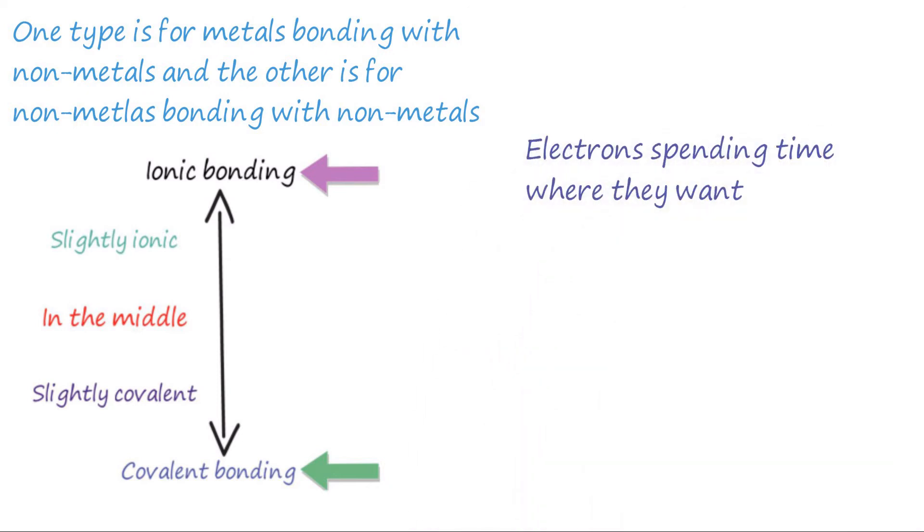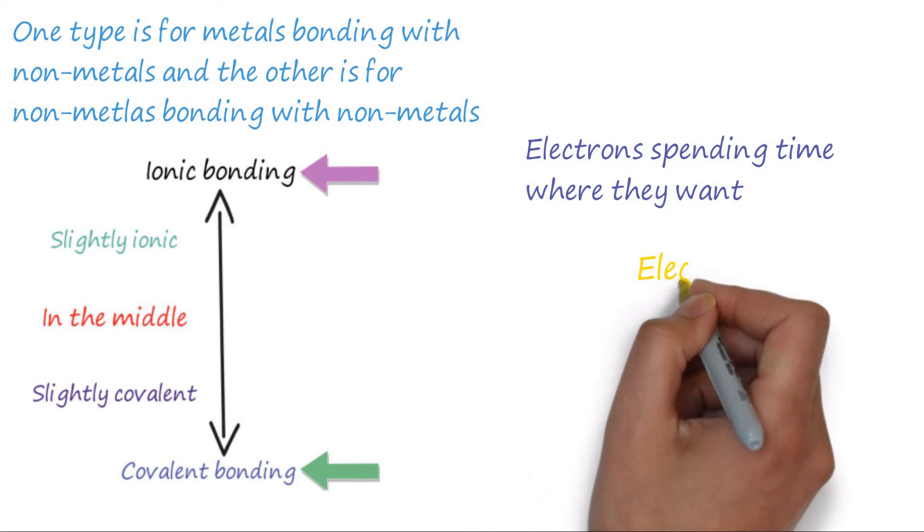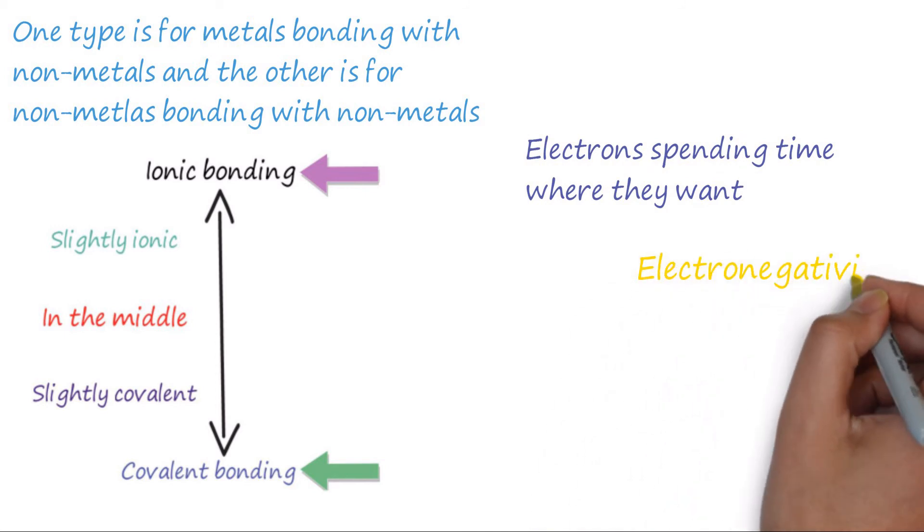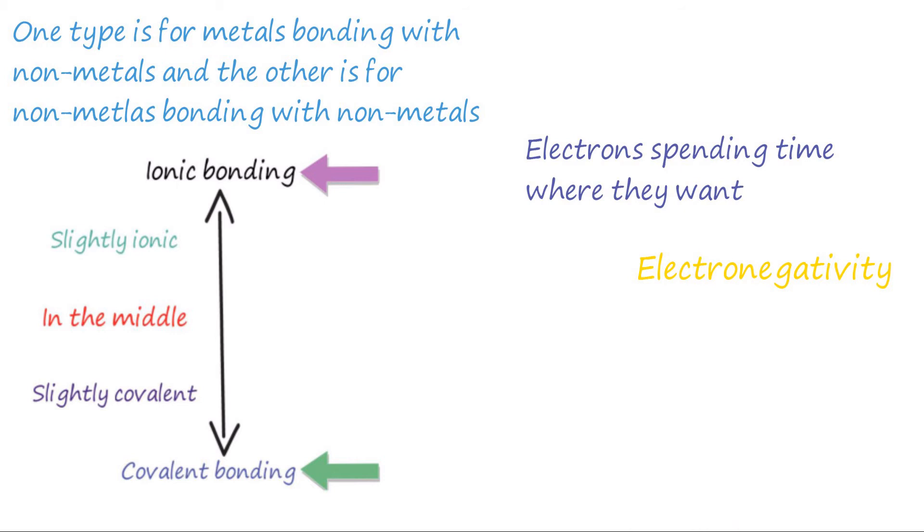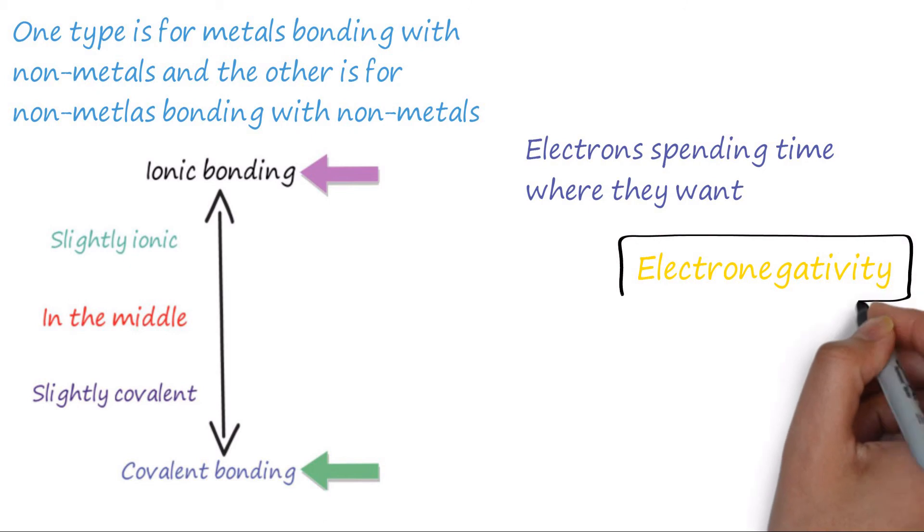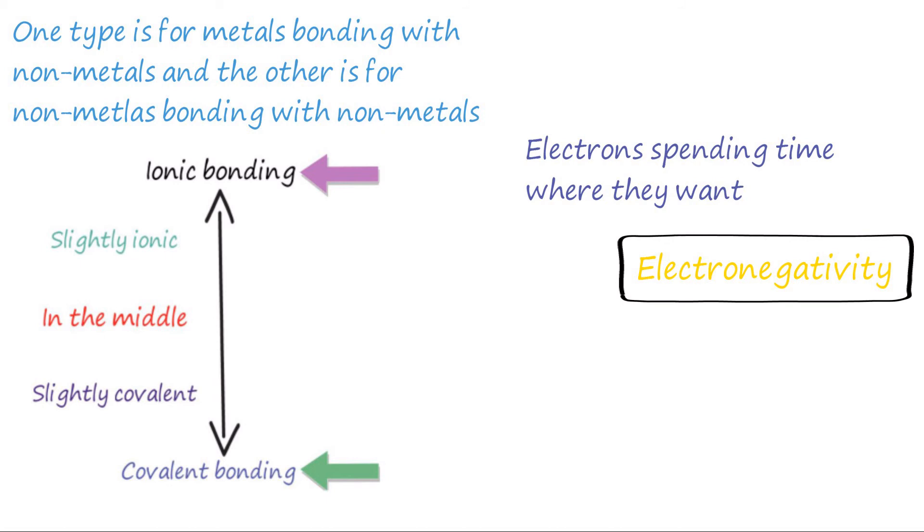As we know, the bond form is dependent on where the electrons spend their time. Where the electrons spend their time is dependent on the electronegativity of the elements. Electronegativity is very complicated, and so for now we will just say it's a measure of how much electrons love an element. We will put a box around it and leave it until our A-levels.